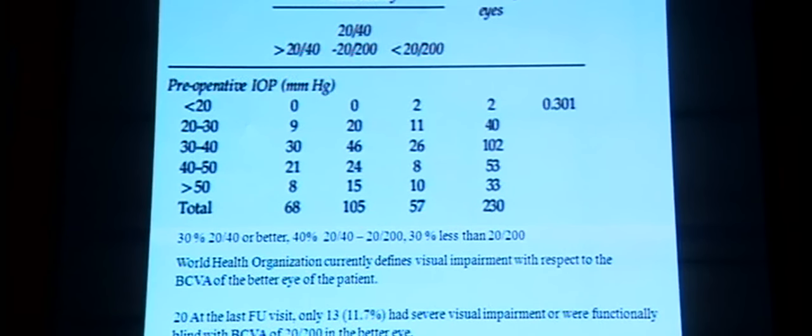Aqueous drainage devices have a definite role when primary surgery and trabeculectomy have failed. Aqueous drainage implants have performed better than trabeculectomy with mitomycin for IOP lowering, but have also required more re-operations for surgical complications.